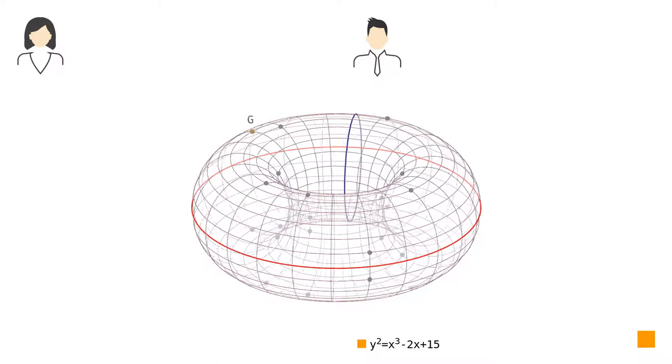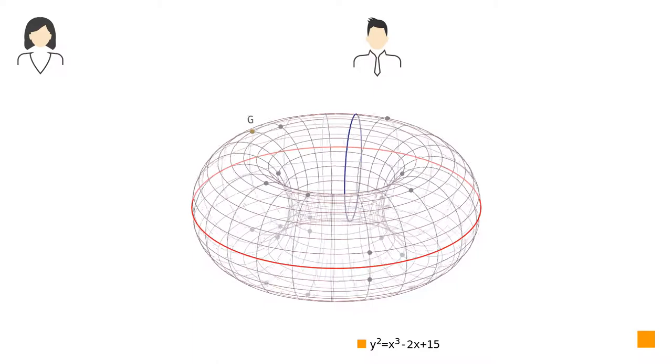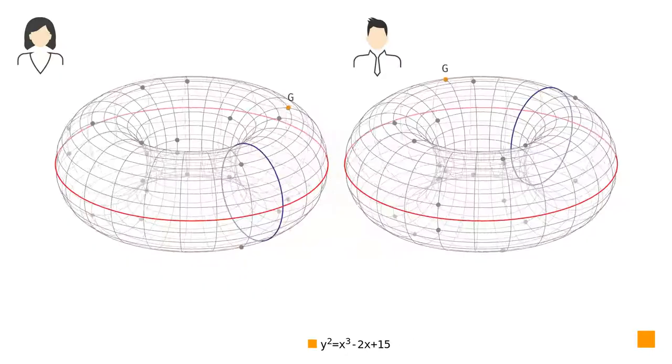To do it, they agreed to use the elliptic curve we have designed throughout this series and to start with a point (4, -5) as the generator. Each of them is using their own torus for performing the calculations.